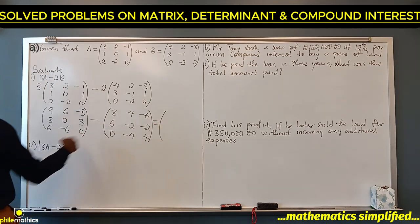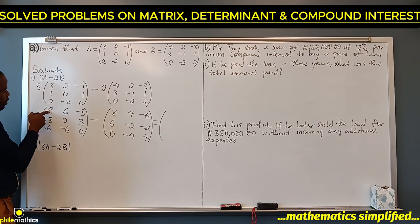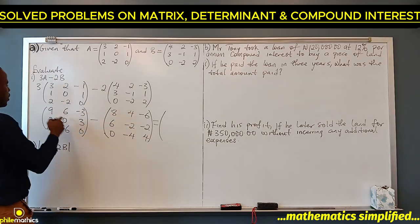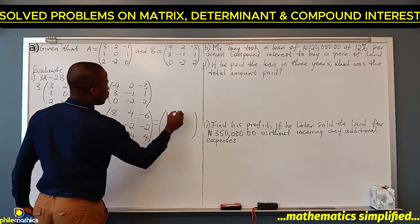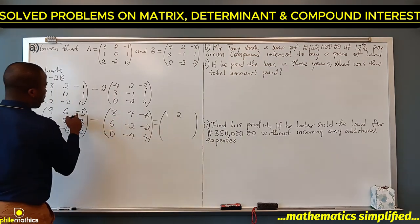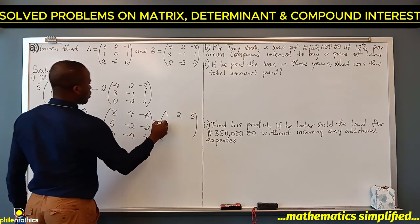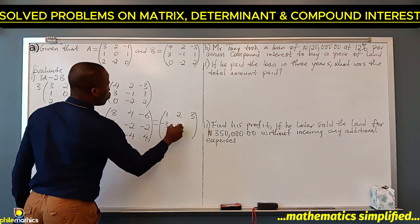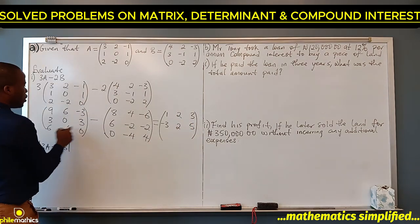Now if we subtract these two matrices, we subtract each corresponding entry. First entry minus first entry, second entry minus second entry, and so on. So: 9 - 8 = 1, 6 - 4 = 2, -3 - (-6) = -3 + 6 = 3, 3 - 6 = -3, 0 - (-2) = 2, 3 + 2 = 5, 6 - 0 = 6.